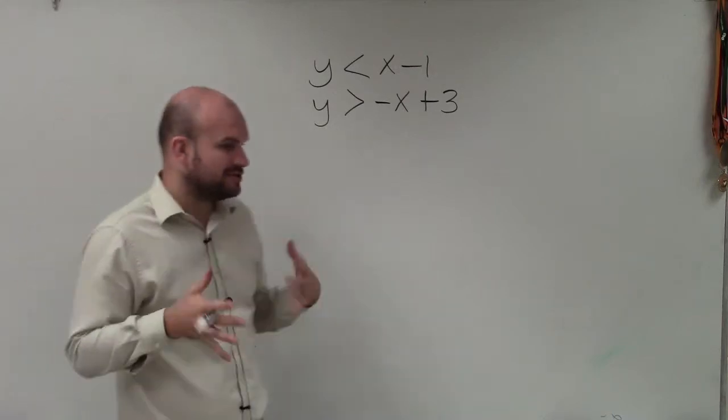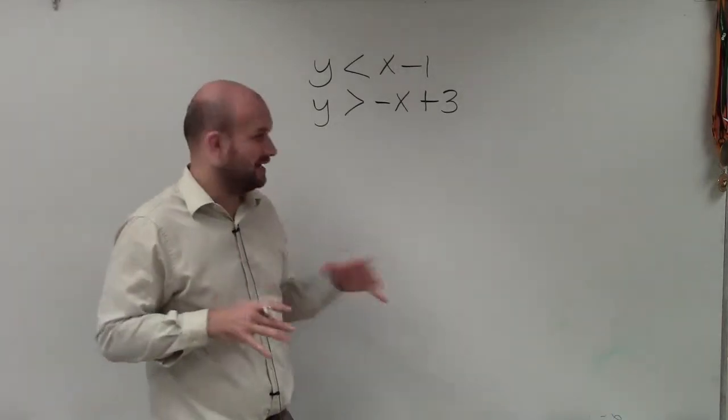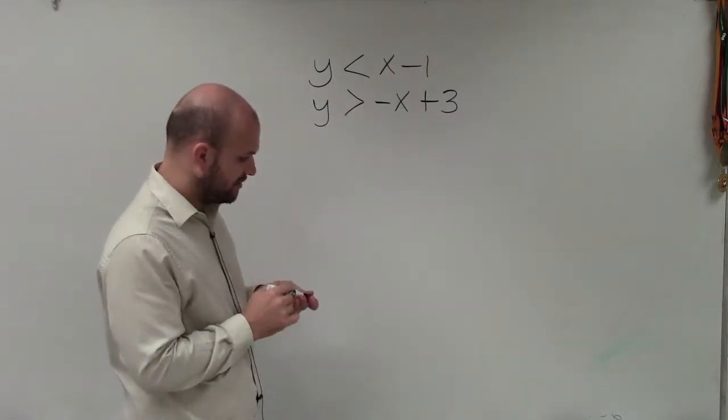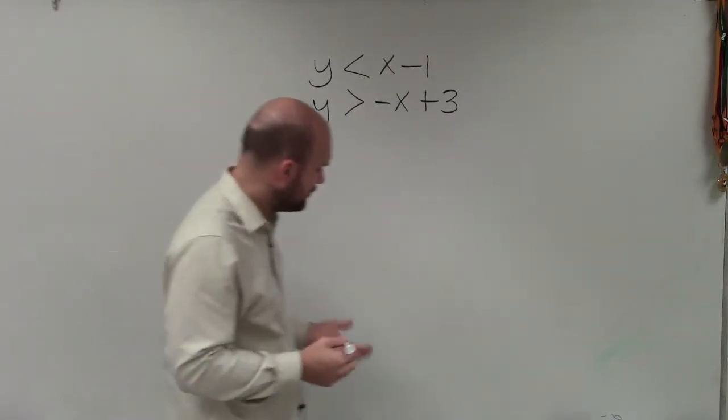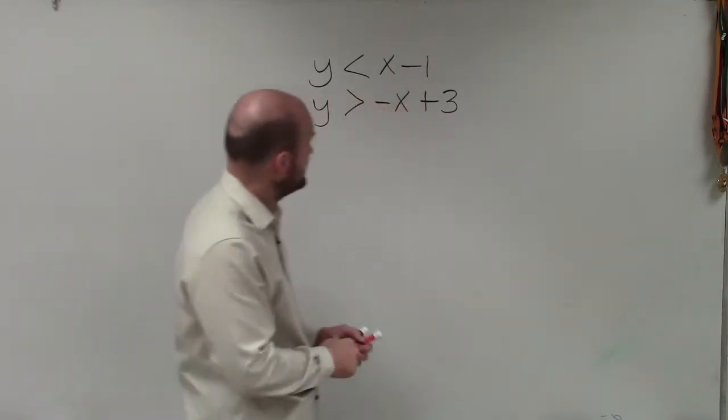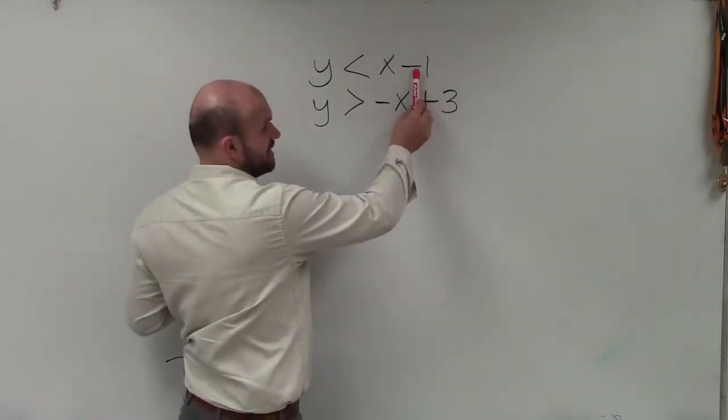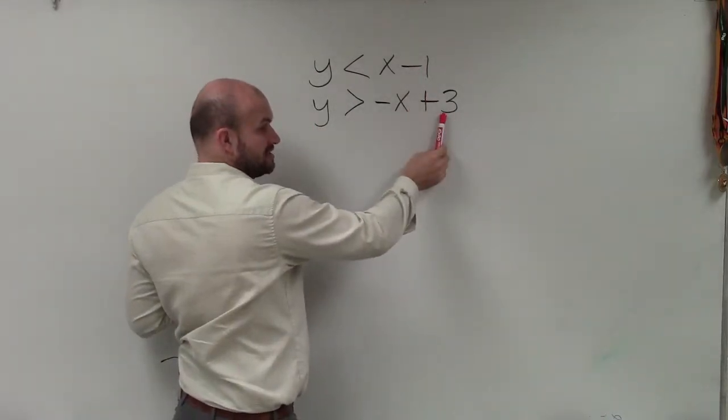Now, usually what I like to do is convert these over to equations and use the shading. But basically, in this case, we have these both in slope intercept form. And hopefully, if you can just recognize here that the y-intercept in this equation is negative 1, and the y-intercept in this equation is 3.